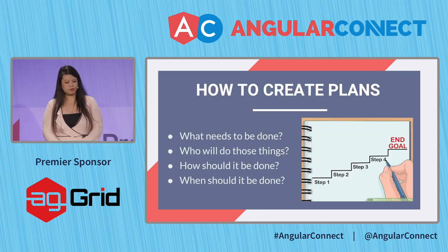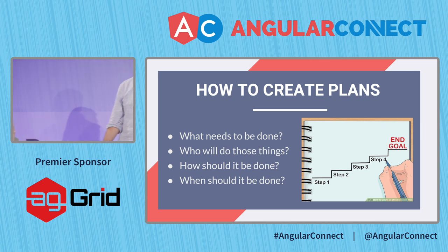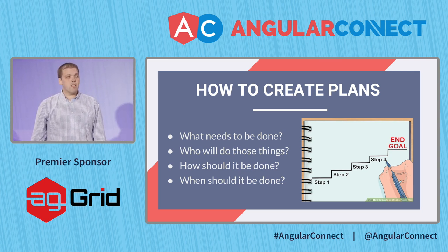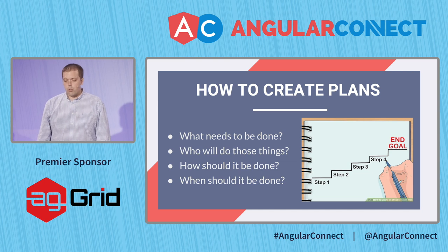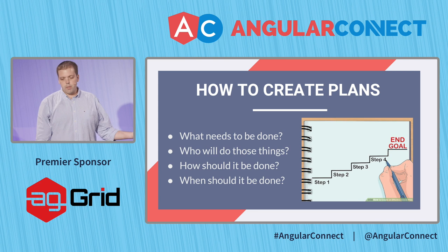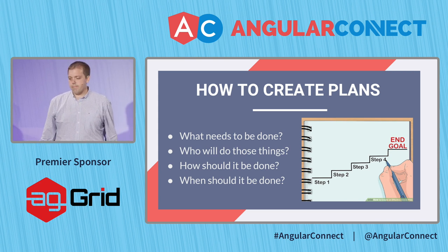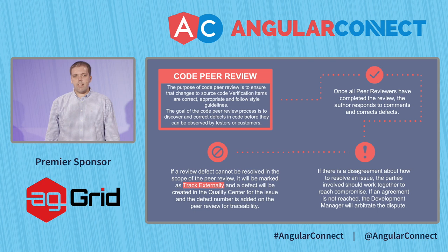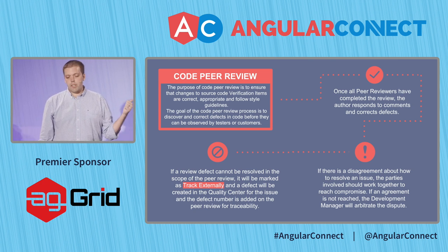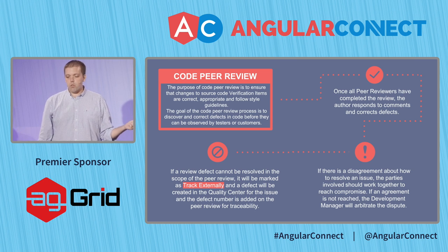A good first step to being successful with process is to actually create plans. You sit down as a team and say: what are the things we actually do here? Who needs to do those things? How should they be doing them, and when? You write these things down and then you follow them. Here's an example of a plan for a code review process. It lays out the purpose of this process, why we do it in the first place, and then walks through a set of steps.